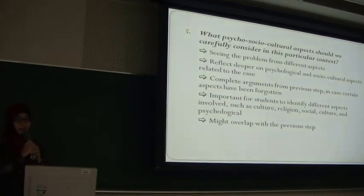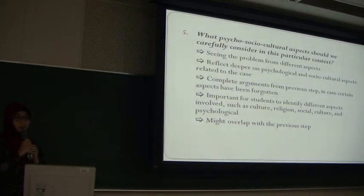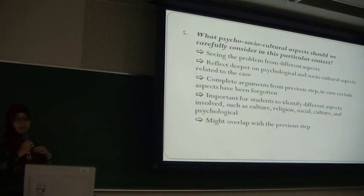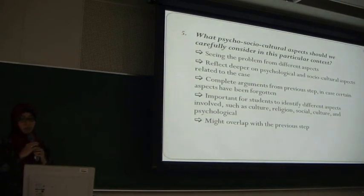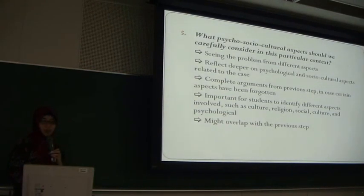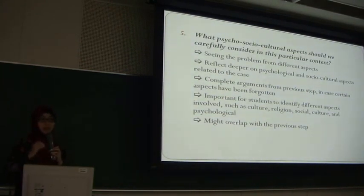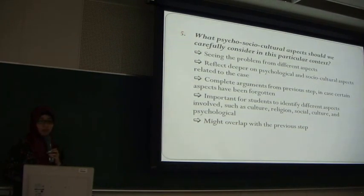Step five is some kind of confirmation on the previous step — it was planned to be like that. It's seeing the issues from different aspects: could be psychological, social, or cultural aspects. We realize that this might overlap with the previous step, but we still thought it was important for them to identify certain aspects there.